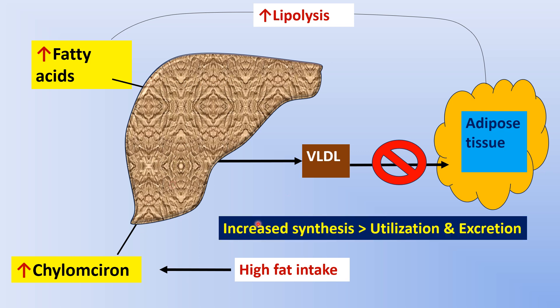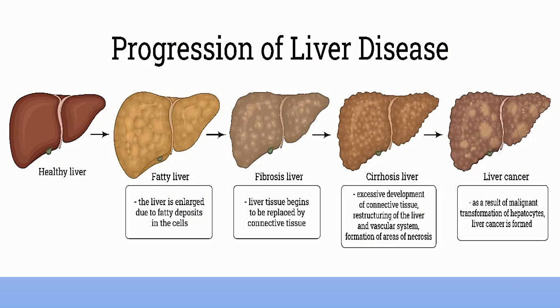When increased synthesis of triglyceride occurs and utilization and excretion of triacylglycerol are defective, it causes fatty liver. Stages of fatty liver: when triacylglycerol accumulates in the liver, it causes fatty liver. After some time, liver tissue is replaced by connective tissue, causing fibrosis. After further progression, nodules form in the liver causing cirrhosis. In chronic alcoholism, it can lead to liver cancer.